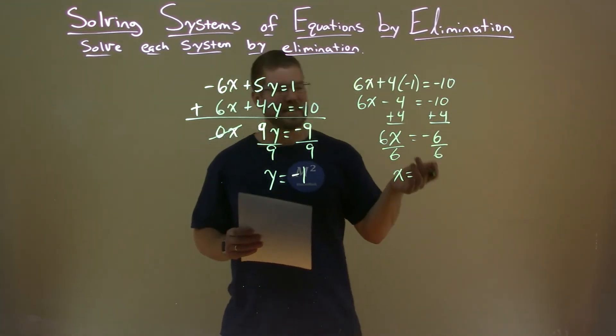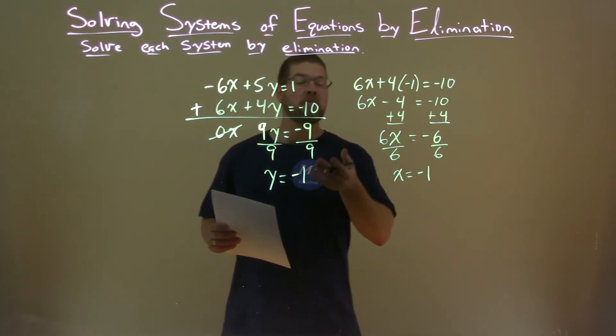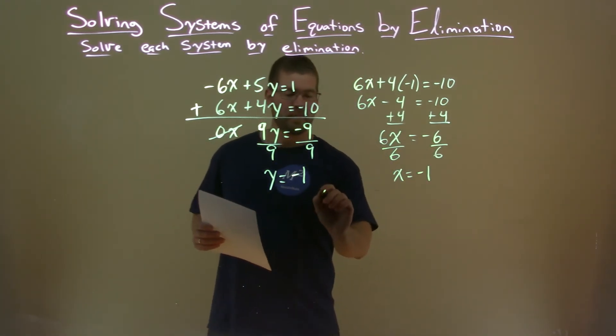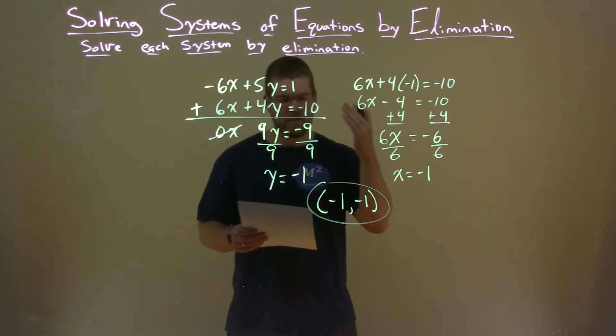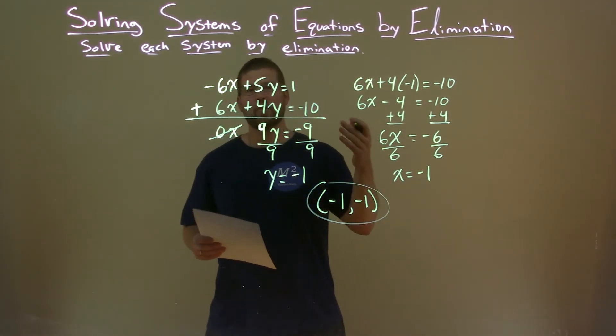Negative 6 divided by 6 is negative 1. So we have negative 1 for the x and y value. We can write that as a coordinate point: negative 1, negative 1. And there we have our answer, negative 1, comma, negative 1.